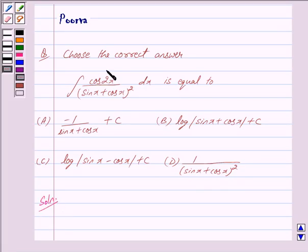We denote this integral by I. So we have I equals integral cos 2x upon sin x plus cos x whole square dx.